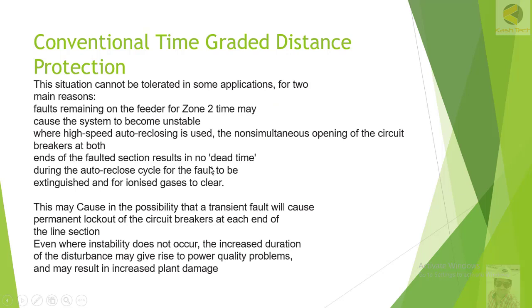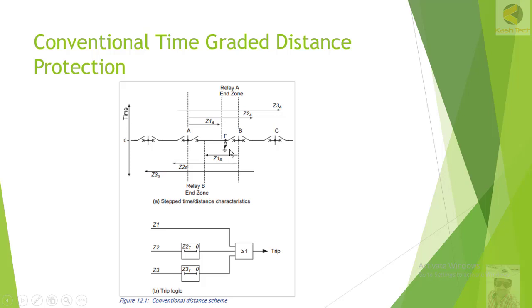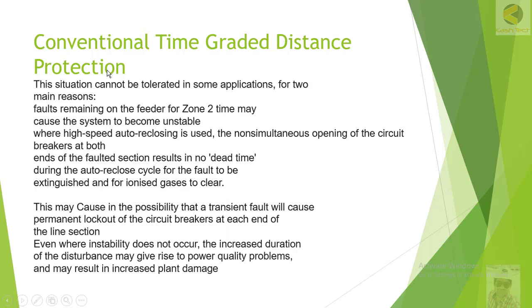Conventional time graded distance protection — this situation cannot be tolerated in some applications for two main reasons. The condition being discussed is: if there is a fault near Station B, Station B will trip immediately while Station A trips with a time delay of 250 to 400 milliseconds.